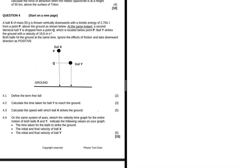At the same instant, an identical ball Y is dropped from a point Q which is located below point P, but Y strikes the ground with a velocity of 19.6 meters per second. Both balls hit the ground at the same time. Ignore the effects of friction and take downward direction as positive.